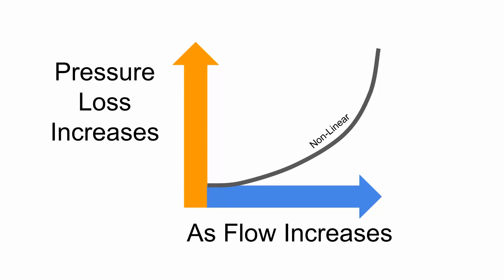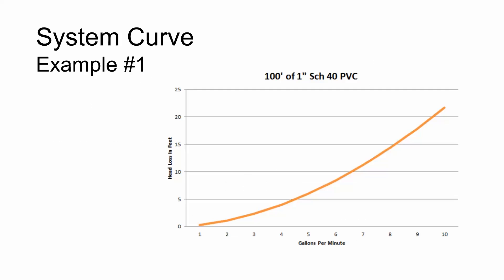Now let's apply that to some real-life information. We've got here a system curve example, and this example is a very basic version of a system curve in that it consists of just a single component: 100 feet of 1-inch schedule 40 PVC pipe, and we can determine by looking at this curve that there is definitely a nonlinear relationship with flow rate and friction loss.